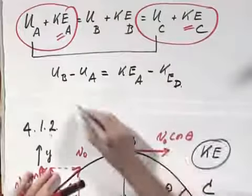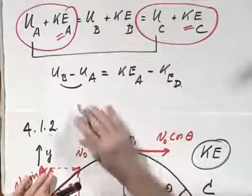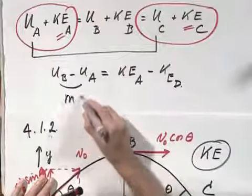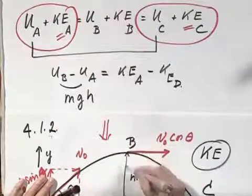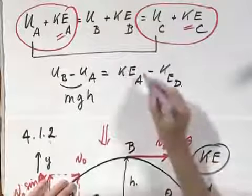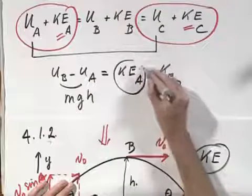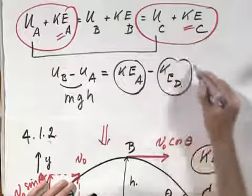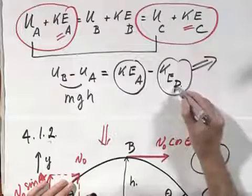U B has of course a higher potential energy than U A, which is M G times H, if this height is H. You know the kinetic energy at point A, and so you should be able to calculate the kinetic energy at point B.